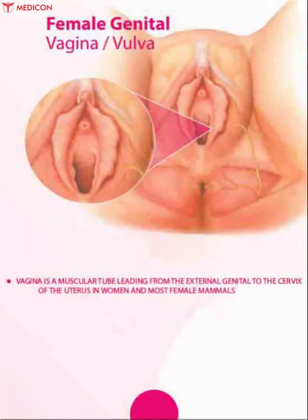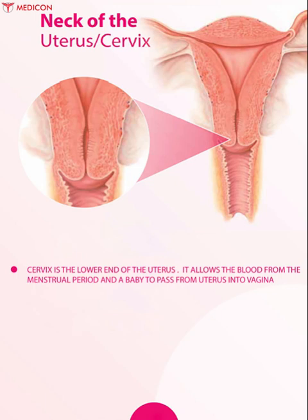Vagina is a muscular tube leading from the external genitals to the cervix of the uterus in women and most female mammals. The external genitals of the female are collectively called the vulva. Cervix is the lower end of the uterus; it allows blood from the menstrual period and the baby to pass from the uterus into the vagina.